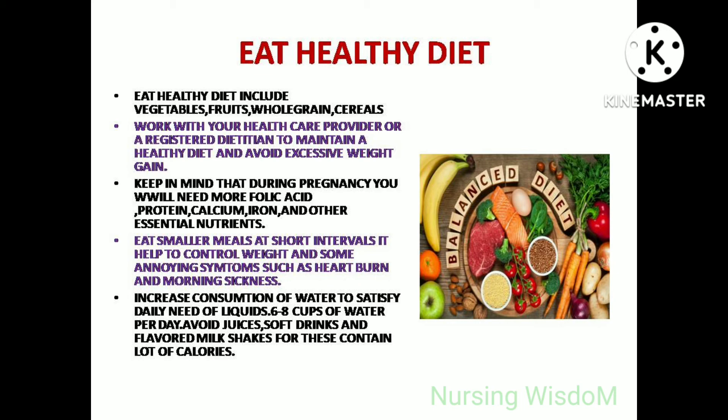Eat a healthy diet including vegetables, fruits, whole grains, and cereals. Work with your healthcare provider or a registered dietitian to maintain a healthy diet and avoid excessive weight gain. During pregnancy, you will need more folic acid, protein, calcium, iron, and other essential nutrients. Eat smaller meals at short intervals to help control weight and reduce symptoms such as heartburn and morning sickness. Increase water consumption to 6 to 8 cups per day, and avoid juices, soft drinks, and flavored milkshakes, as these contain a lot of calories.